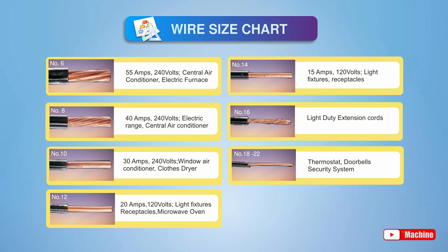The ampacities in this table are for copper wires in NM cable. The ampacity for the same wire in conduit is usually more, while the ampacity for aluminum wire is less.